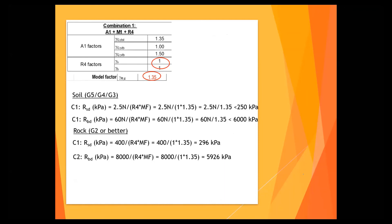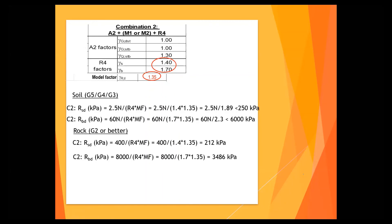For Combination 1, the model factor is 1.35. The design shaft resistance Rsd for Combi 1 is 2.5 kN/m² divided by R4 (which is 1) and divided by the model factor - this cannot be more than 250. The end bearing cannot exceed 6,000 divided by 1.35, which can never reach 100. Likewise this cannot exceed 150 for rock, same thing - you always get 296 and 5,926 respectively. For Combination 2, the R4 factor is greater than 1, meaning your resistance is lesser and your end bearing is also lesser accordingly.